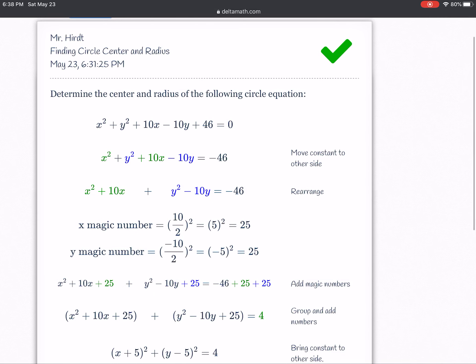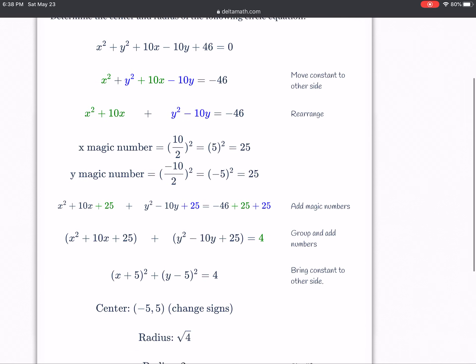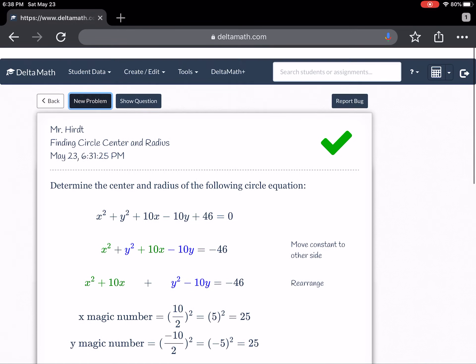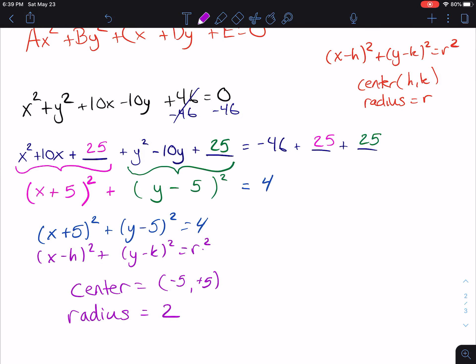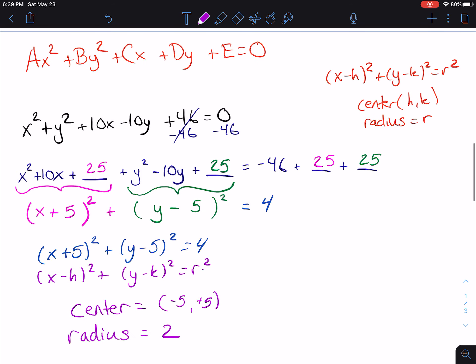So they do what they call a magic number here. You divide by 2, then you square. Divide by 2, then you square. And it's that simple. Any problem you get, it's going to be those exact same steps. So what you'll be doing is you will be rewriting, reorganizing, and moving each piece over. You'll be completing the square on the x's, completing the square on the y's, and then you will just be simplifying from there. And then you will have an equation now in center radius form, which will make life a lot easier.